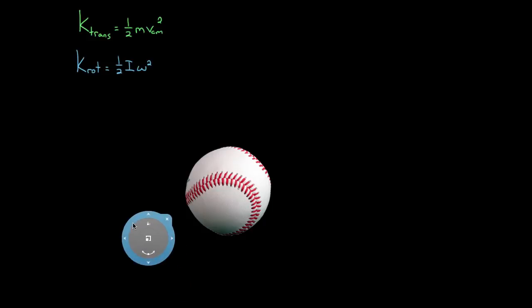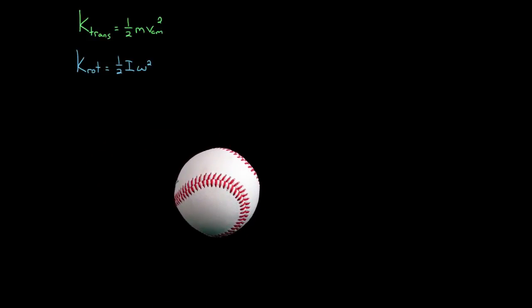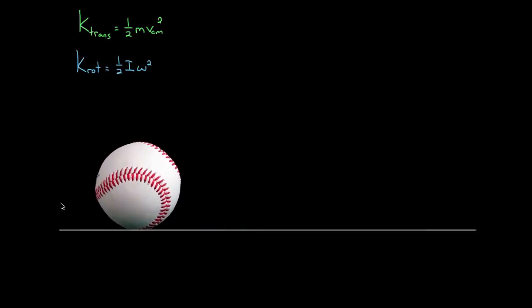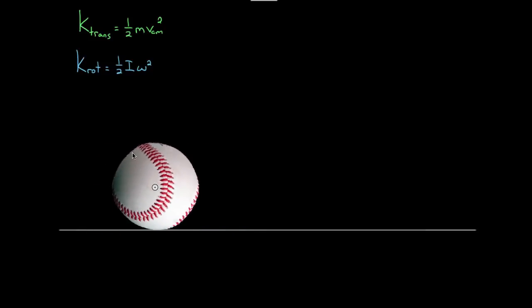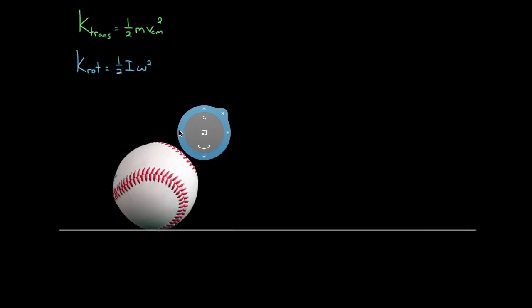This comes up in the following case. Imagine instead of pitching a baseball, we roll it across the concrete. It's going to rotate as it moves forward, and so it's going to do something that we call rolling without slipping. At least that's what this baseball is most likely going to do.